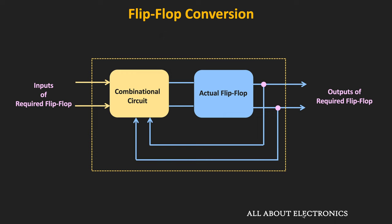Let's say we have one flip-flop and we want to convert it into another flip-flop. For this conversion, we require a combinational circuit. Typically, this combinational circuit consists of a few logic gates. As you can see in this block diagram, the output of the existing flip-flop is given to this combinational circuit, and the inputs of the required flip-flop will also be given to this combinational circuit.